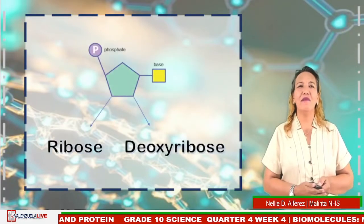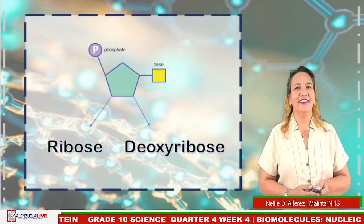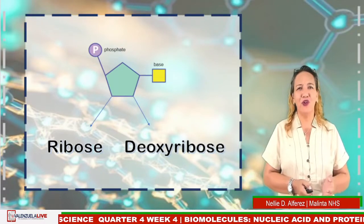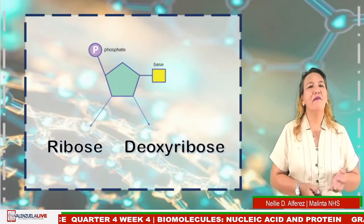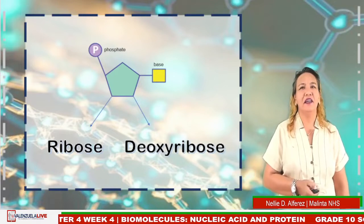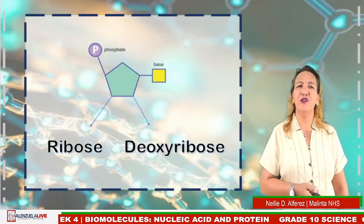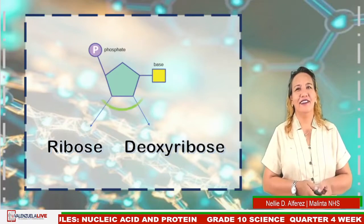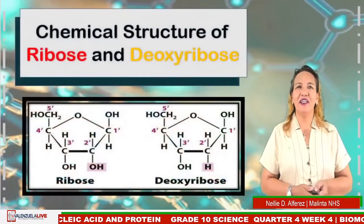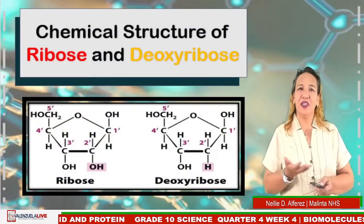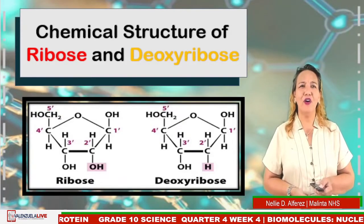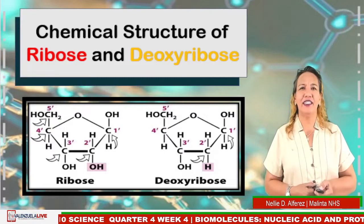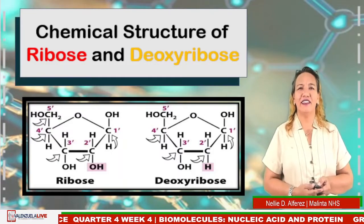First, let us look at the sugar component. The sugars present in nucleic acids are five-carbon sugars called pentoses, meaning five. There are different pentoses in our body, but the two most important pentoses present in nucleic acids are ribose and deoxyribose. Looking at the chemical structure of ribose and deoxyribose, we can see carbon atoms at each corner, with the last carbon located outside the ring and oxygen at the center-most position.